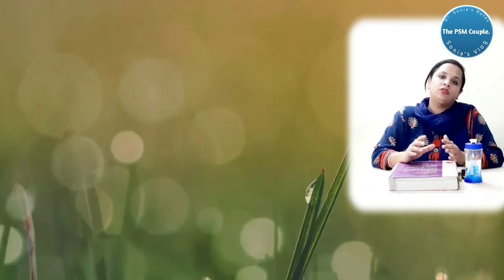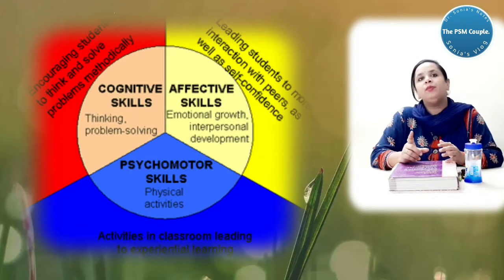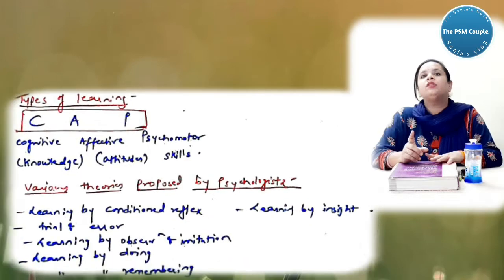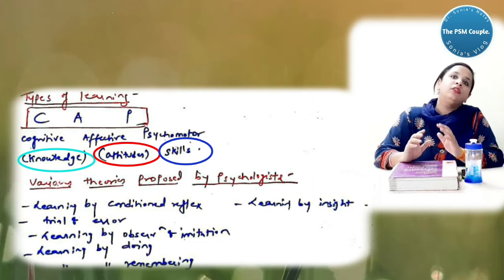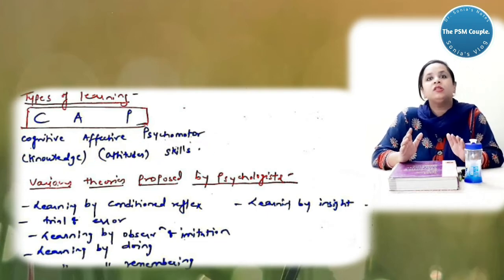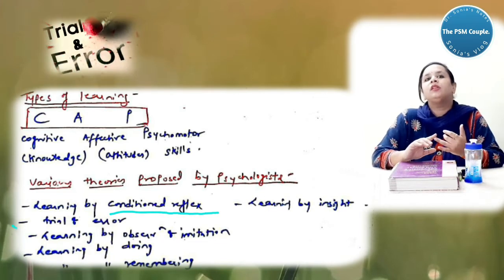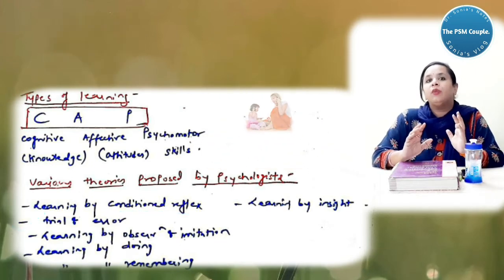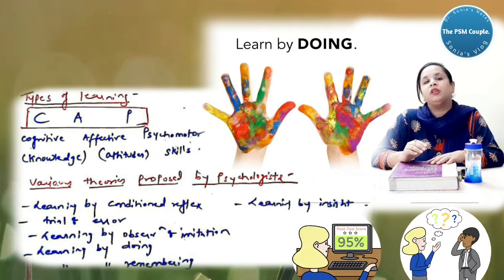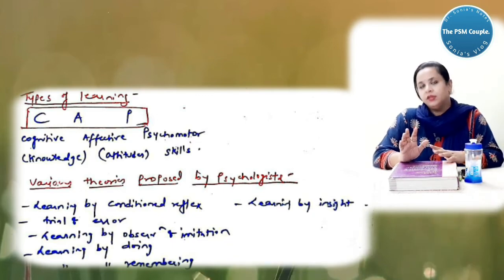Now what are the types of learning? There is a mnemonic for type of learning that is CAP. C stands for cognitive, that is your knowledge. Affective means attitude and psychomotor means your skills. Now what are the various theories proposed by the psychologist for learning? Learning can be by conditioned reflex, by trial and error method, by observation, learning by doing, learning by remembering and learning by insight. You should remember few names of it.